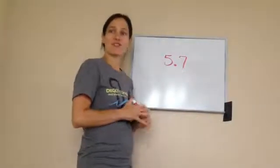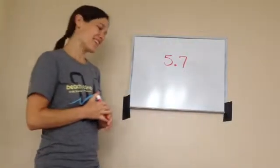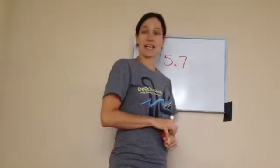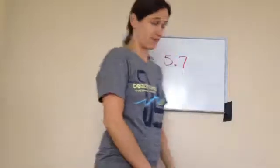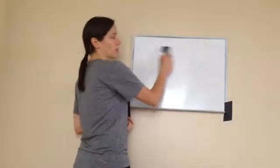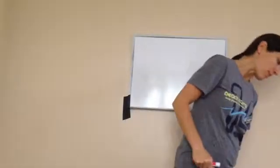Alright, this is fifth grade lesson seven, and this is on writing and comparing numbers through hundred thousands, and then also ordering the numbers.